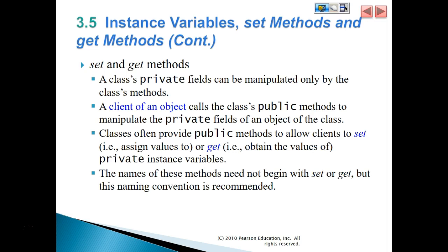Set and get methods: a class's private fields can be manipulated only by the class's methods. A client of an object calls the class's public methods to manipulate the private fields of an object of the class. Classes often provide public methods to allow clients to set or get values of private instance variables. The names of these methods need not begin with set or get, but this is the naming convention that is recommended.